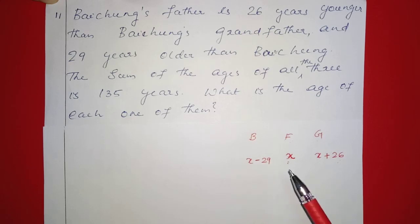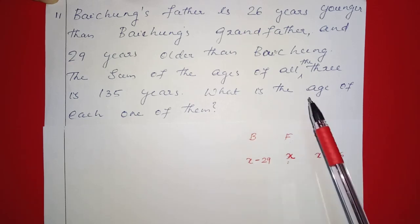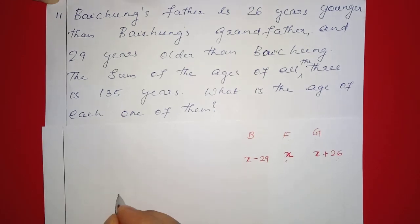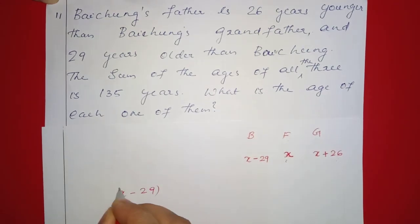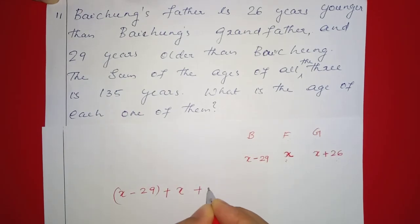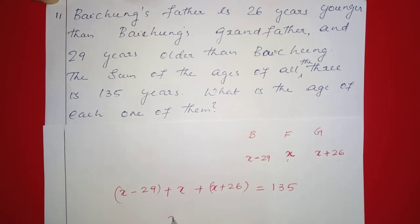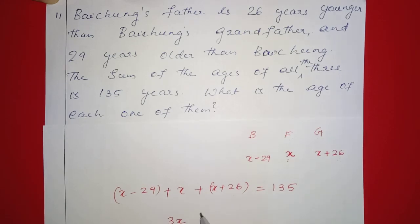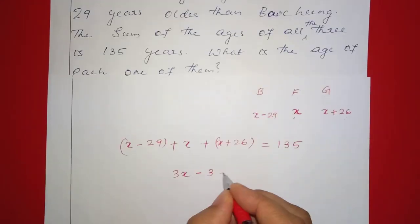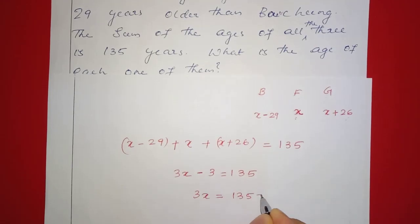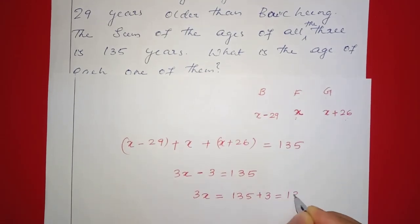The sum of the ages of all three is 135 years. So x minus 29 plus x plus x plus 26 is equal to 135. Combining x terms gives 3x, and minus 29 plus 26 is minus 3. So 3x minus 3 equals 135, which means 3x equals 138.